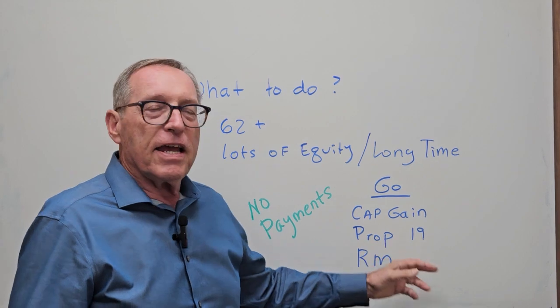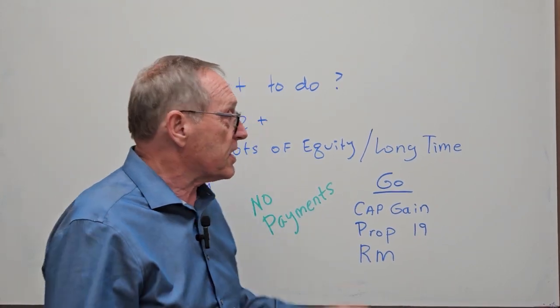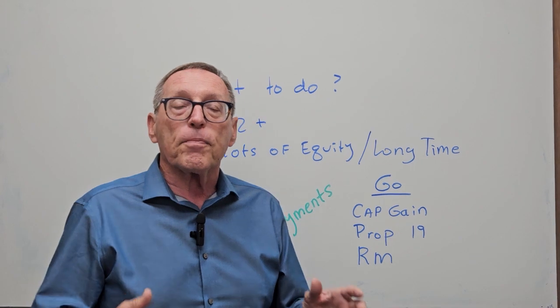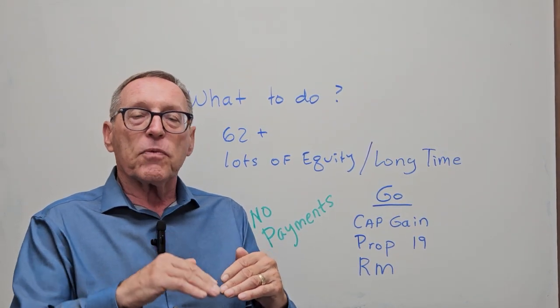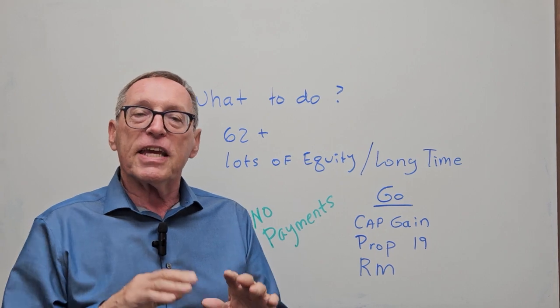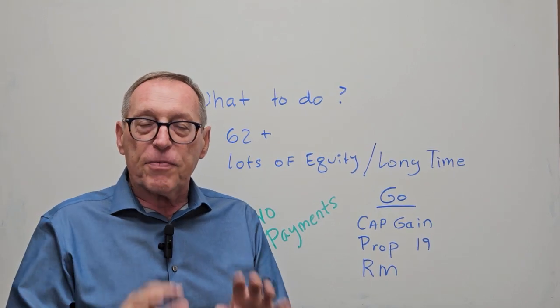So you want to know how much capital gain. And then secondly, if you're more than 55 years old, you got to be 62 to get a reverse mortgage, you qualify for Prop 19. Prop 19, which means you can move anywhere in California and you can keep your tax base.